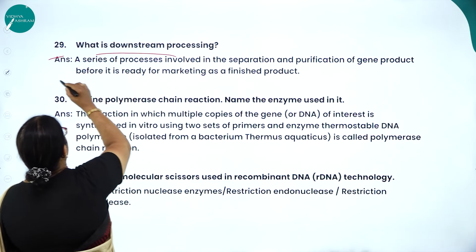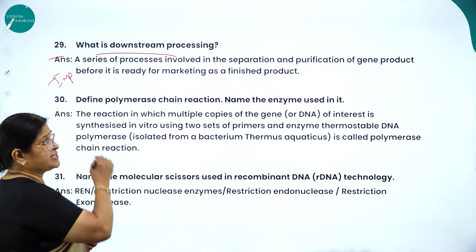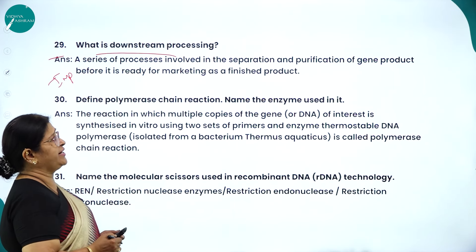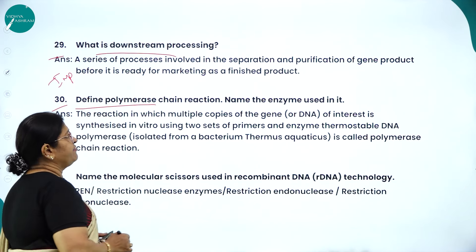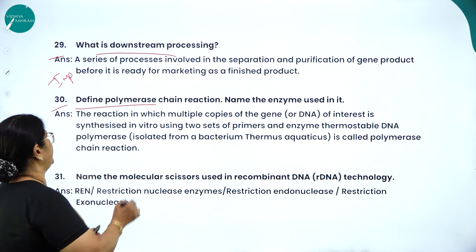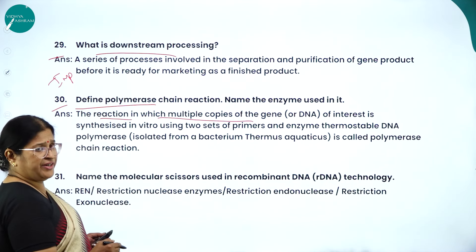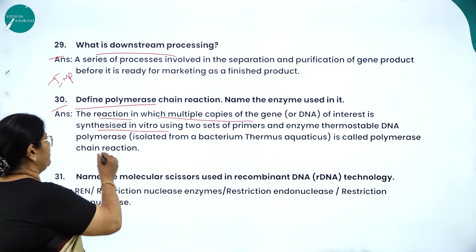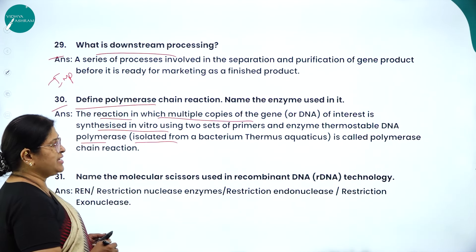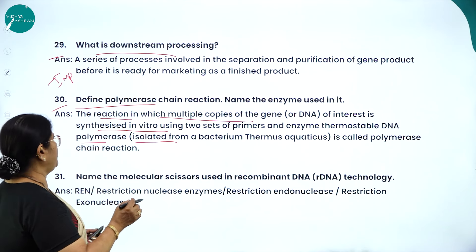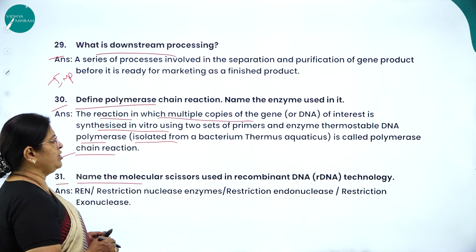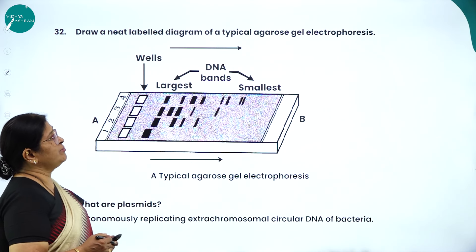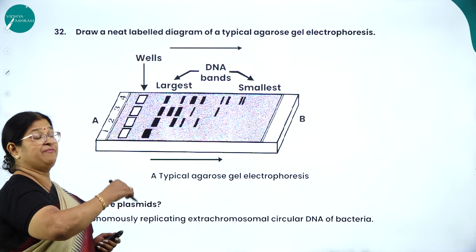Downstream processing: a series of processes involved in the separation and purification of a gene product before it is ready for marketing as a finished product. Polymerase chain reaction is the reaction in which multiple copies of the gene of interest are synthesized in vitro using two sets of primers and thermostable DNA polymerase isolated from Thermus aquaticus. The molecular scissors used in recombinant DNA technology are restriction endonucleases (REN).